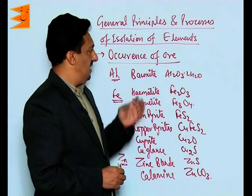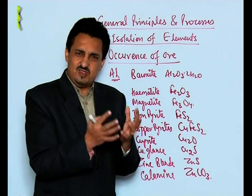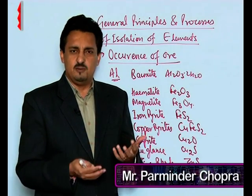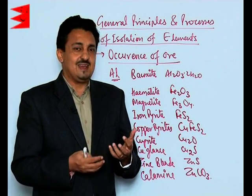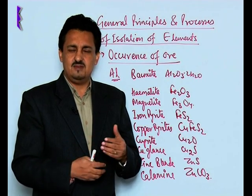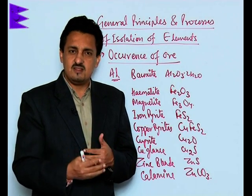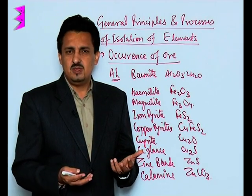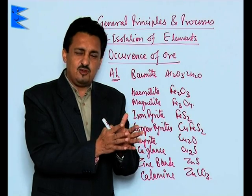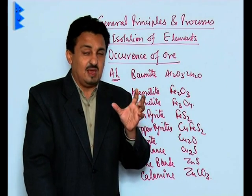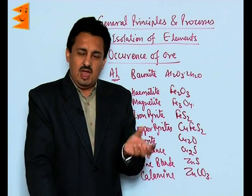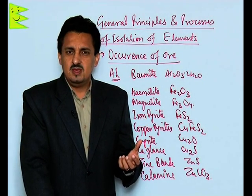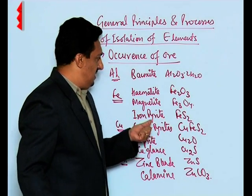Let us now understand how ores exist in nature. Ores exist in different forms like oxides, sulphides, carbonates, hydroxides, sulphates, halides, etc. The classification of ores can be done on the basis of their chemical composition and on the basis of the elements to which they belong. I have given you the list here.